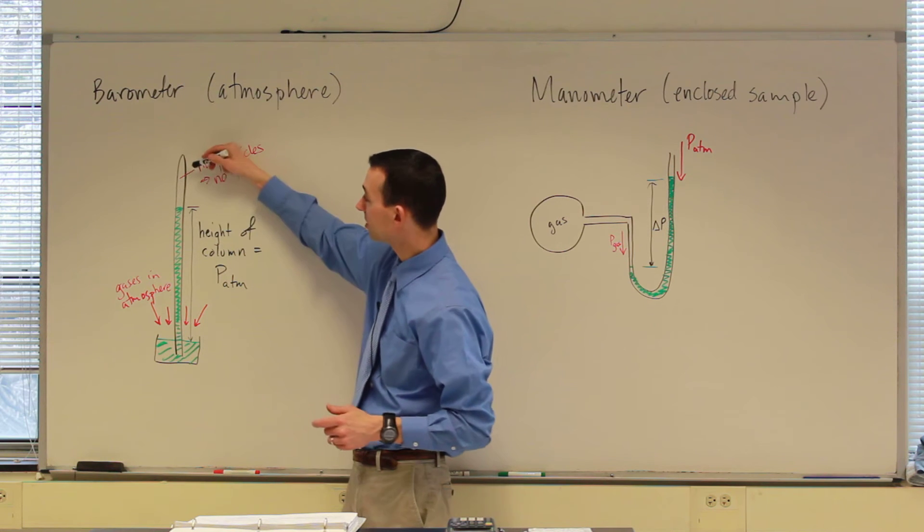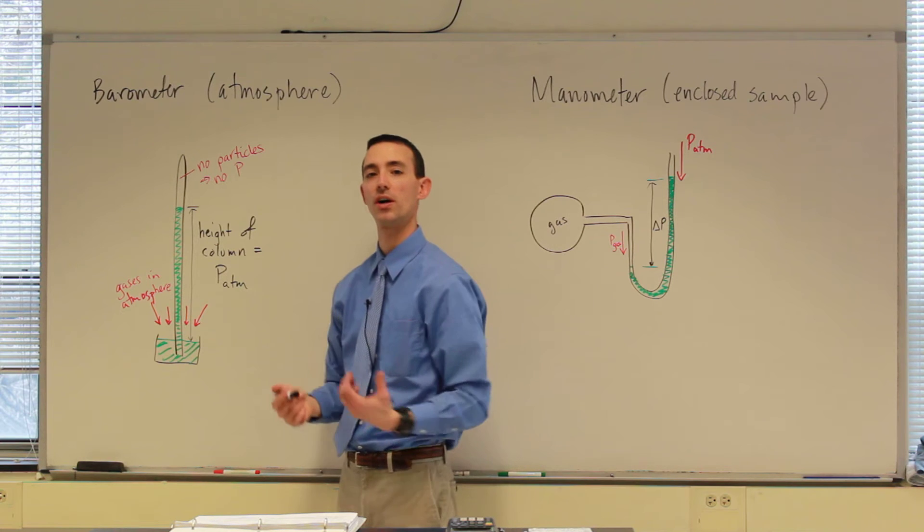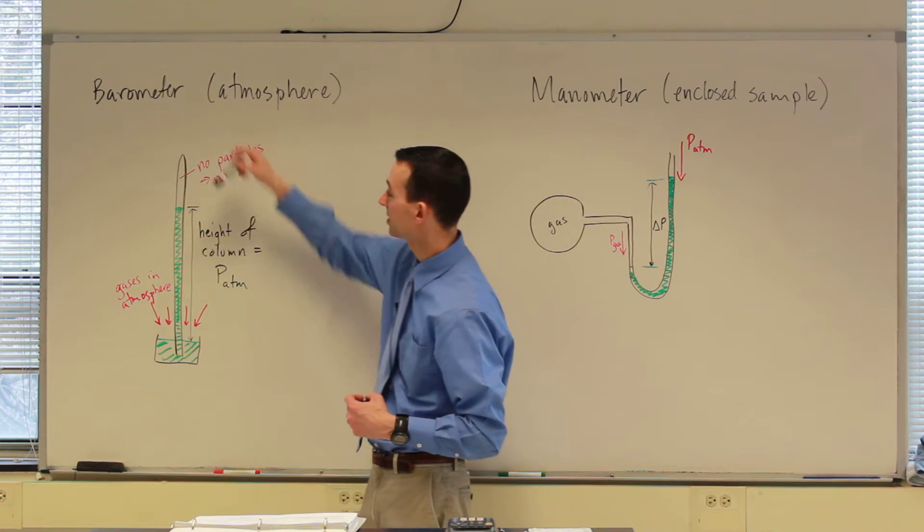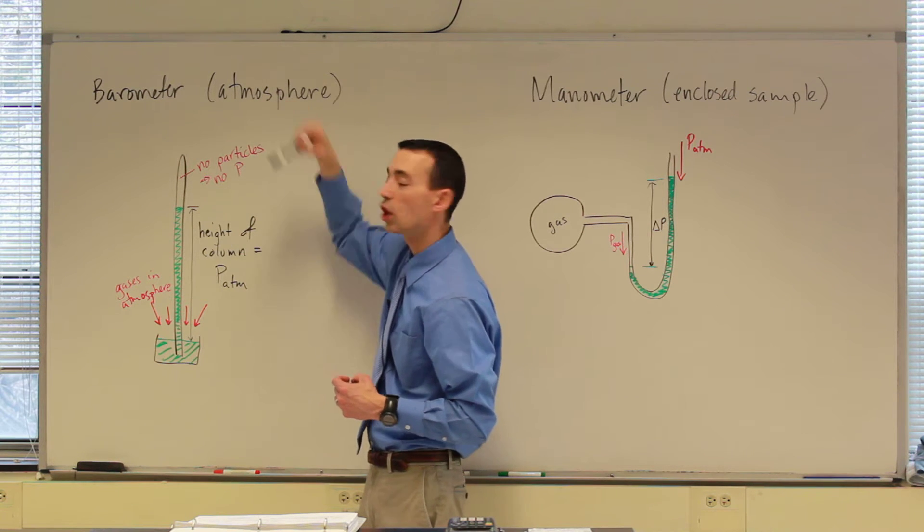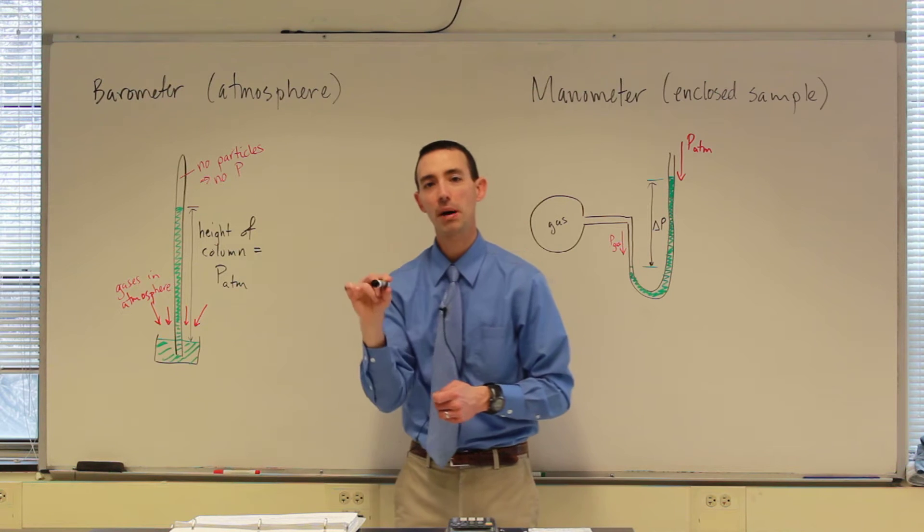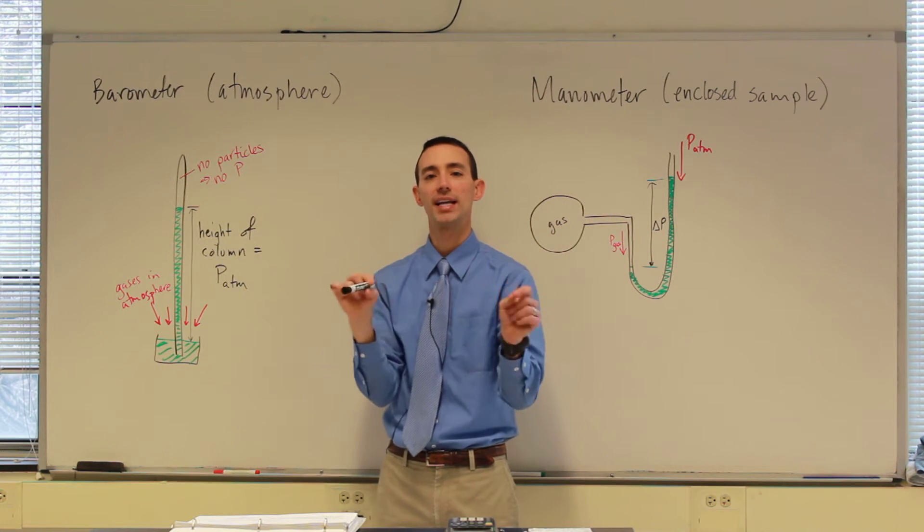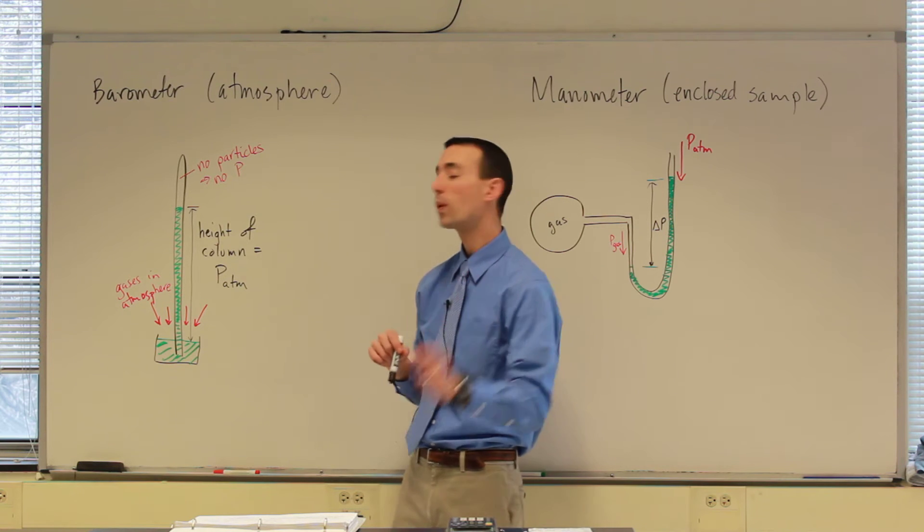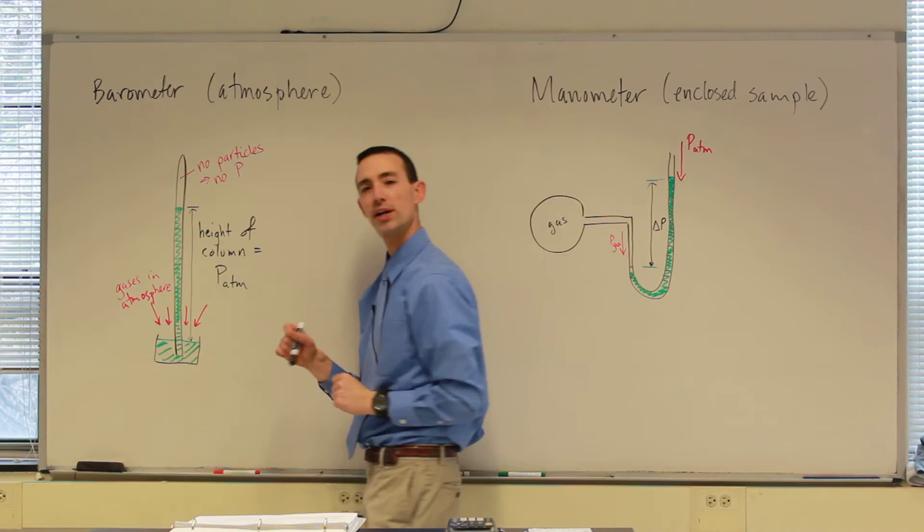When you do that, some of the particles of mercury would fall down, because gravity is pulling on them, but nothing would take their place. So this head space above the mercury has no particles in it. As I just described a minute ago in a little box, there were gas particles bouncing around hitting the walls. That's where the pressure comes from. We don't have that here, though. No particles, so there's no pressure up there.